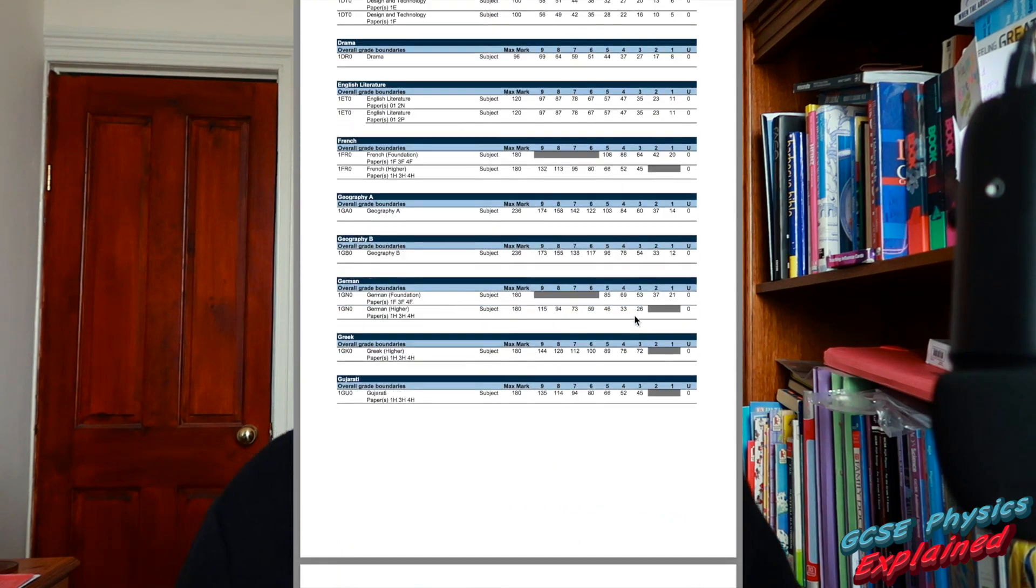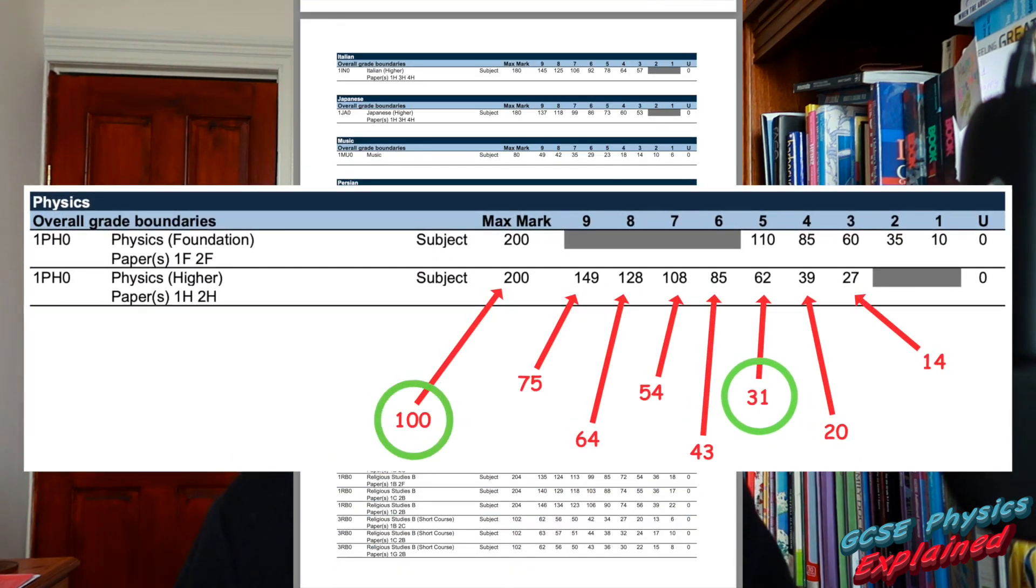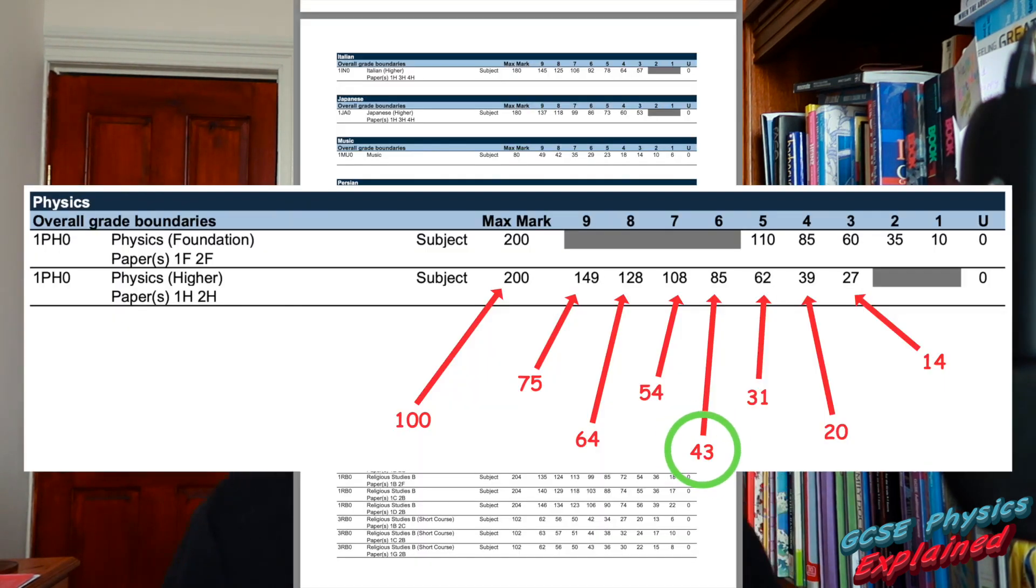On the physics triple higher paper, you only need an average of about 31 out of 100 on both papers for a level 5, which again you can get just from the calculations. Then every time you go up by about 11 marks, you will jump up an extra level. So roughly 43 marks is a level 6, 54 marks is a level 7, 64 marks is a level 8, and 75 marks out of 100 is level 9. I hope you understand how much of a difference you can make on the exam papers, especially this year, just by doing well on the calculations.